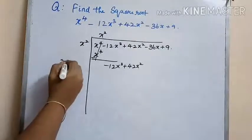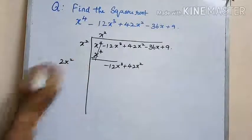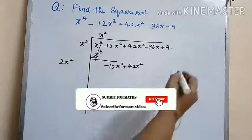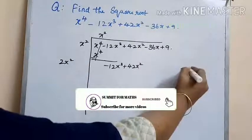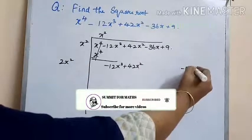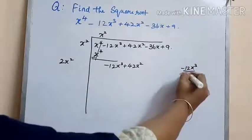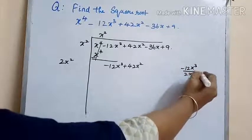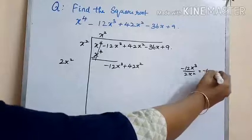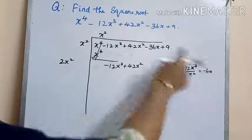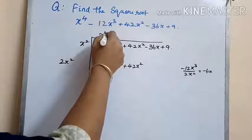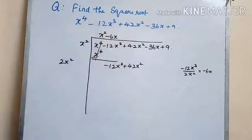Here we have to double x squared so we get 2x squared. In order to find the next quotient we divide minus 12x cubed by 2x squared, which gives minus 6x.